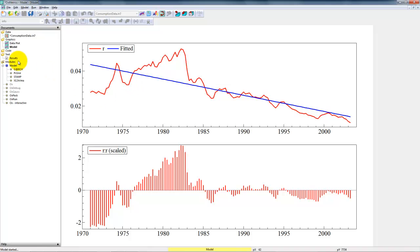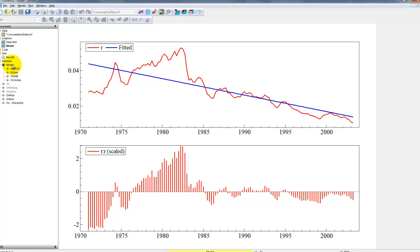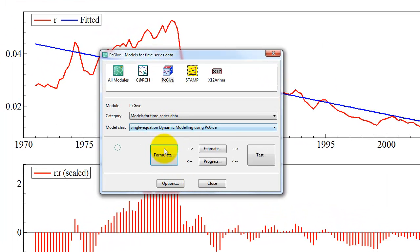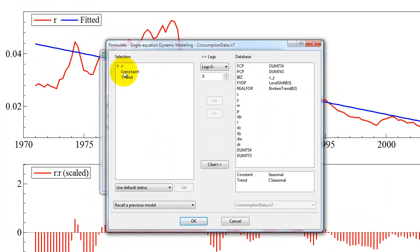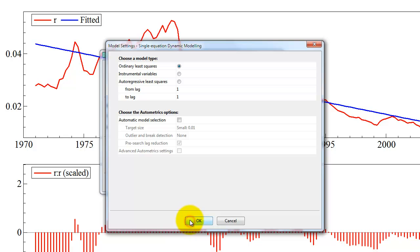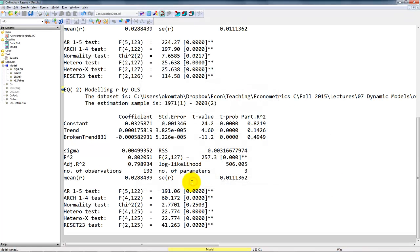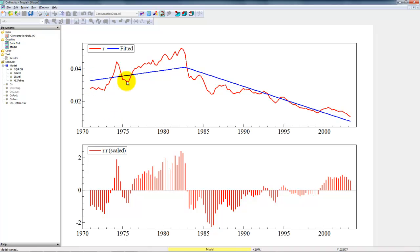So instead, we could allow for a broken trend. Do that here. Go back to the model. We have the constant and the trend. And now we add our broken trend variable without lags. We estimate it with the full sample. And we go back to the graph here. Now we can see that we get the following. This looks better than before. But it still seems like the trend in the first period is not really capturing what we wanted to do. It seems like we have a level shift around here. So we want to include that as well.